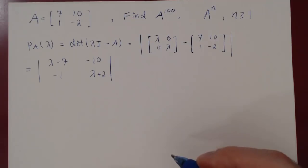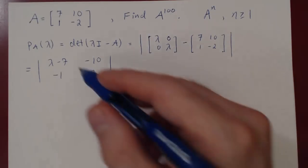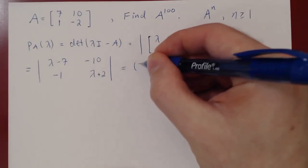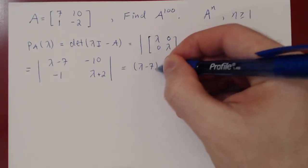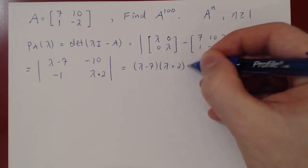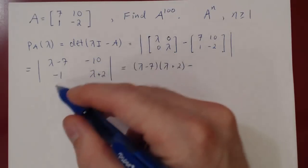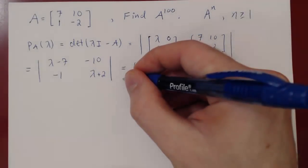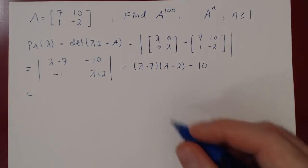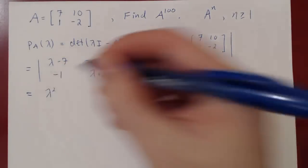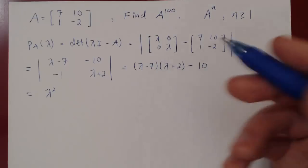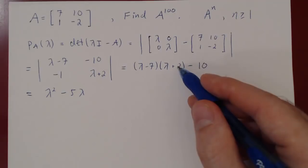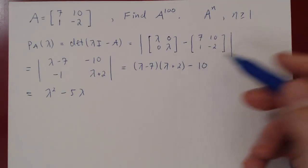For a 2 by 2 matrix, the determinant is AD minus BC. So we have (λ - 7)(λ + 2) minus BC, which is (-1)(-10) = positive 10, so minus 10. Expanding, we get λ² + 2λ - 7λ - 14 - 10, which gives λ² - 5λ - 24.